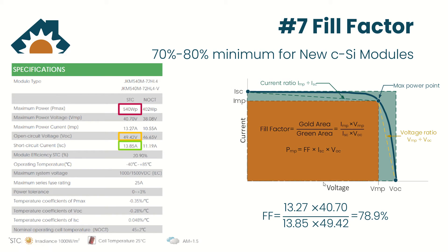Looking at the datasheet, it says it has about a 3% tolerance for power. So taking that power tolerance of 3% — subtracting about 3% on the lower end and adding 3% on the upper end — gives us a range of about 76.5% to 81.2% in an ideal situation.